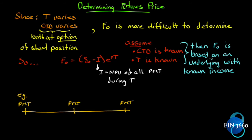If we make these assumptions, the futures price is based on an underlying with known income. Basically, if we know what the delivery is and we know T, we have an underlying with known income. The futures price is related to the spot price as follows: F = (S - I) × e^(rT), where I is the net present value of all payments during time T — not the income itself, but the net present value — and we compound continuously at the market rate for the relevant period.